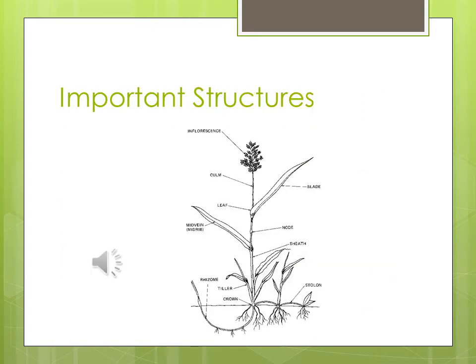Here we have a good diagram of the important structures of a typical grass plant. Starting at the top: the inflorescence, or seed head, sitting on a culm. Below that is the leaf, attached at the node, with the grass blade — the green part we see — containing a mid vein or mid rib. Just below that is the sheath. At the very bottom are the tillers, with the crown sitting right on top of the soil. From that crown, stolons spread out starting new grass plants, and rhizomes underneath allow the plant to grow and expand. These are testable structures.